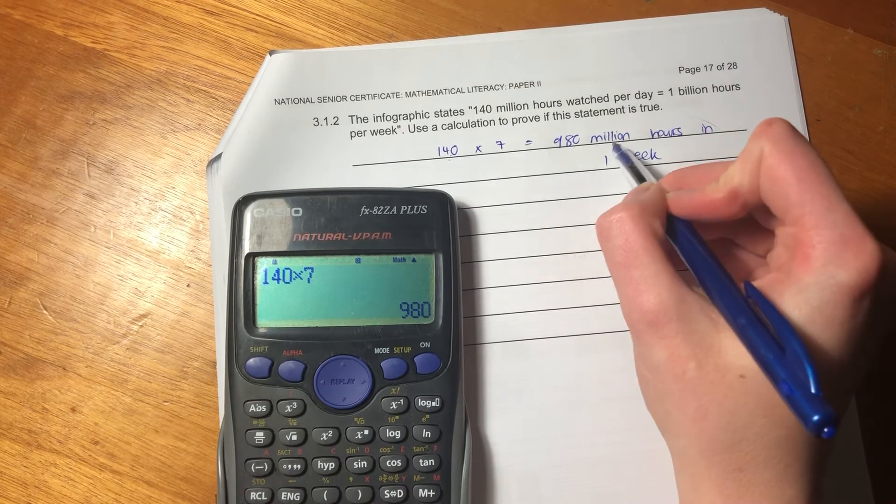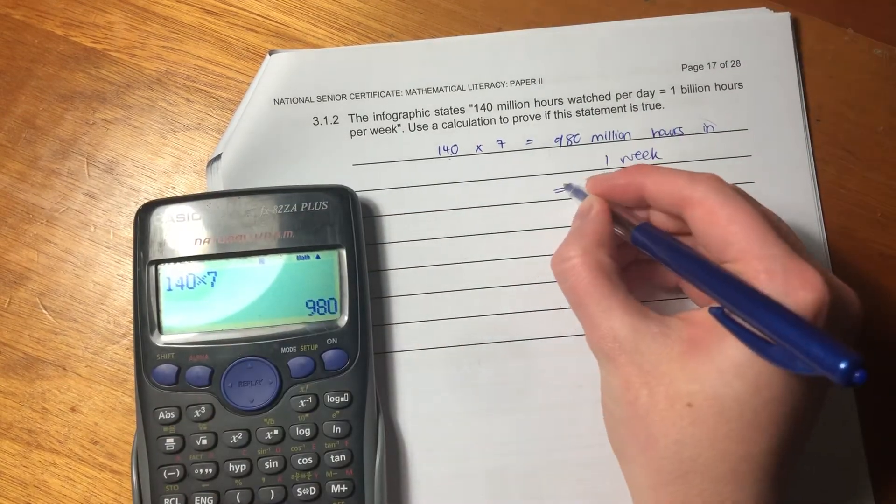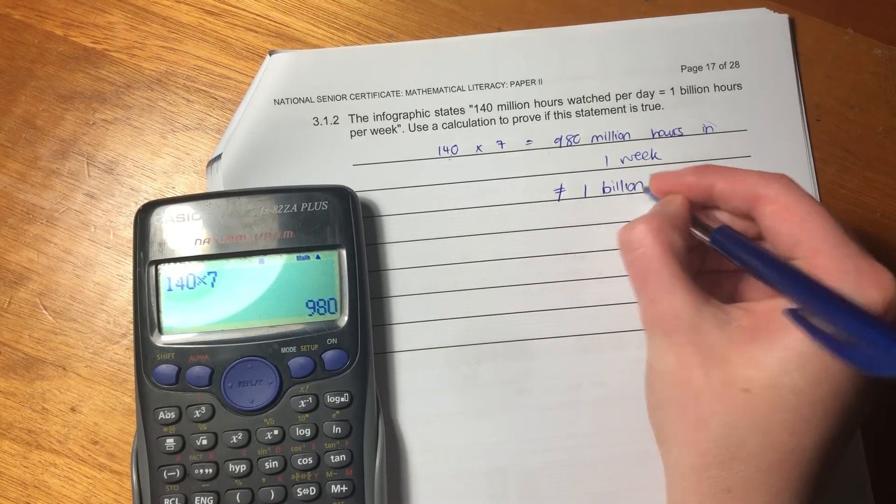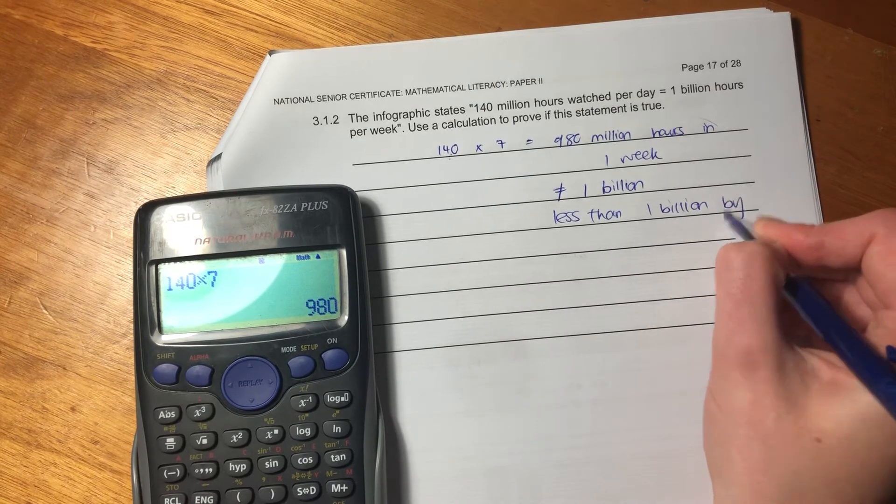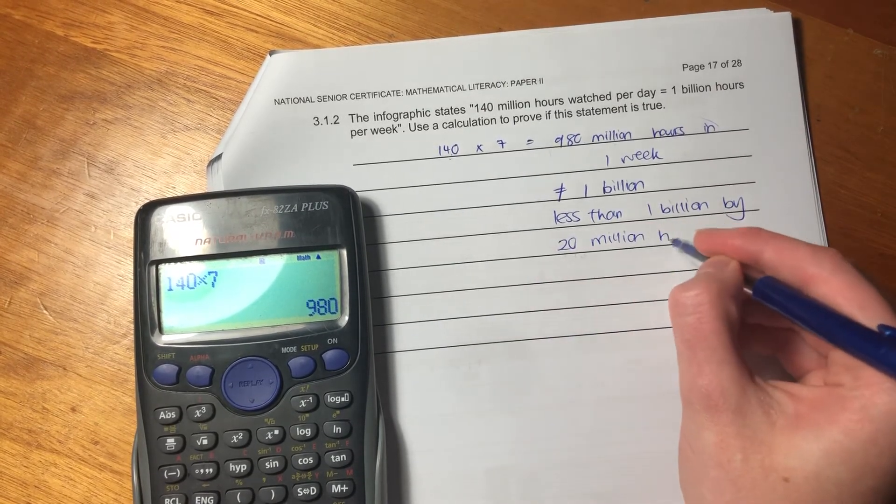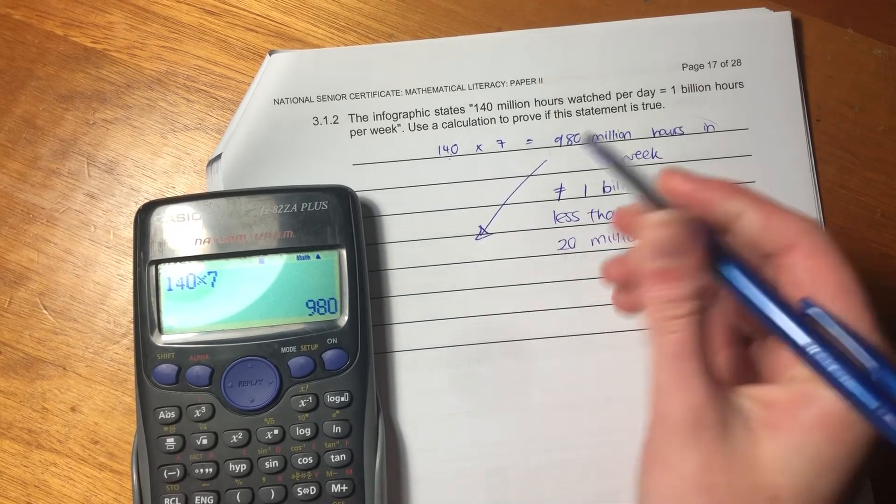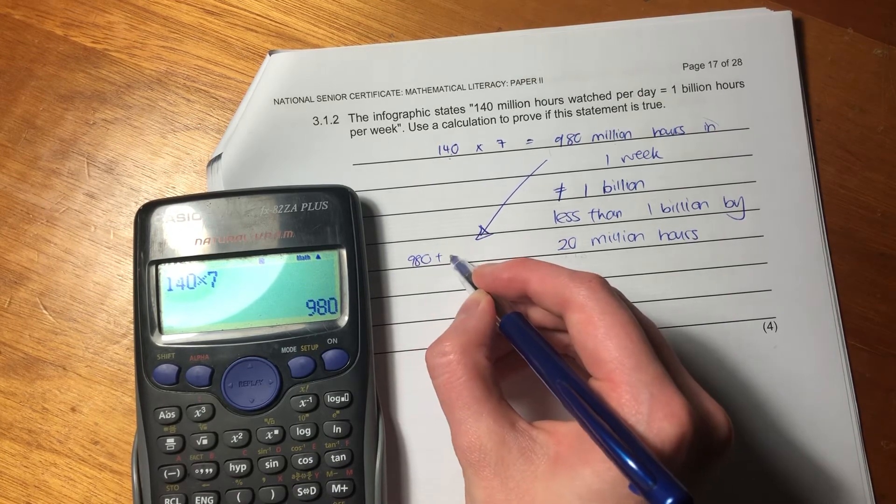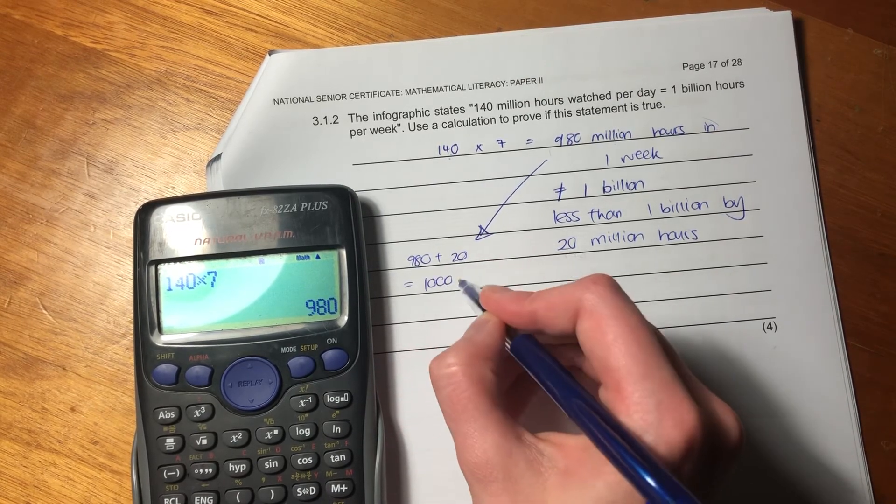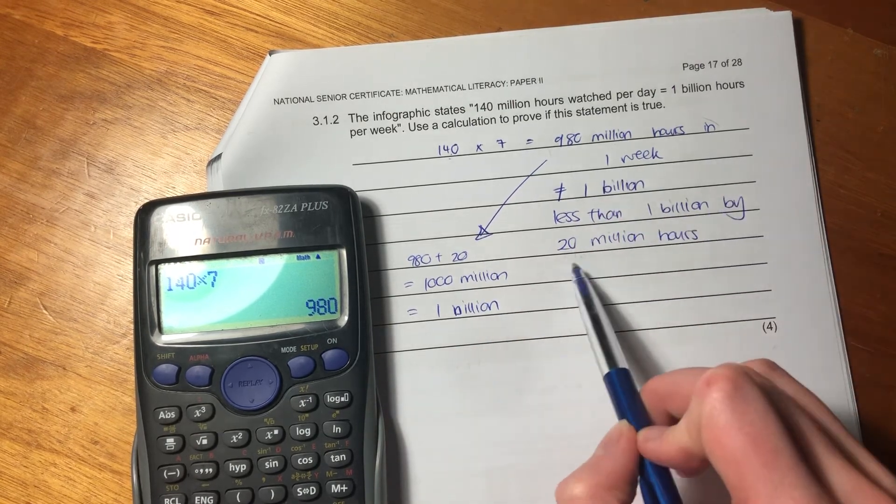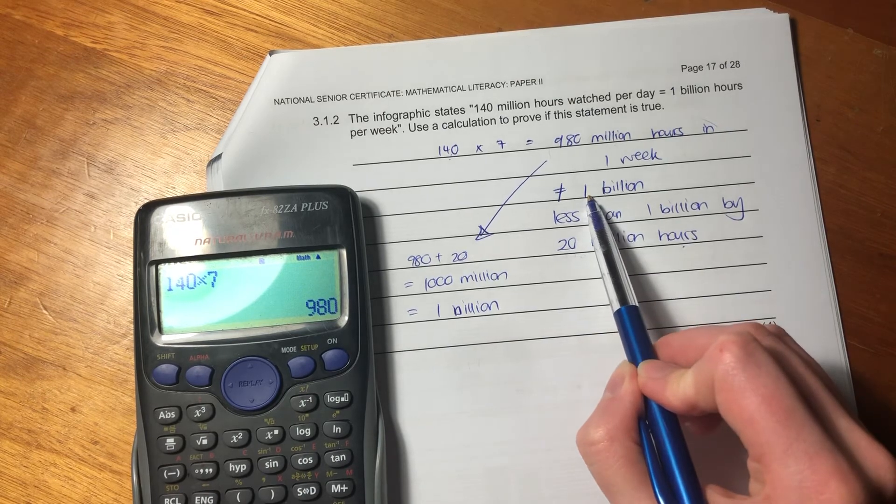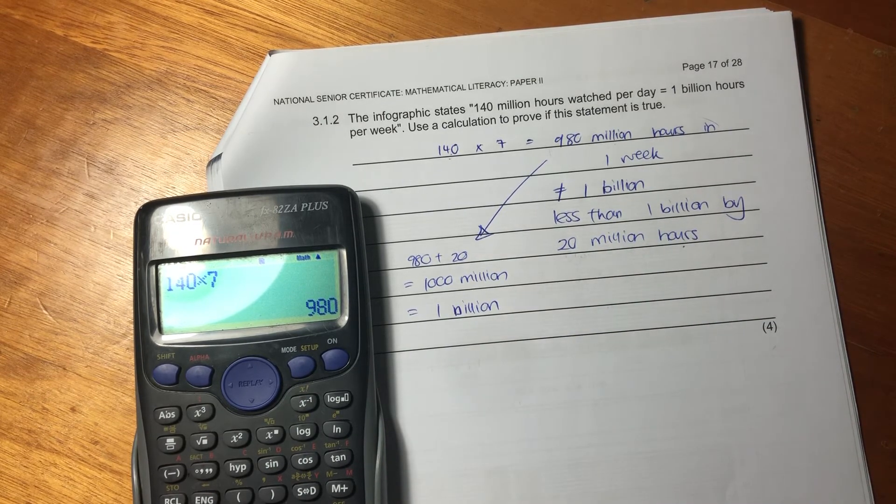Now, tell me, is 980 million equal to 1 billion? No, it isn't. This does not equal 1 billion. In fact, it is less than 1 billion by 20 million hours. So we'd have to add, if I said 980 million plus 20, then I get to 1,000 million, which equals 1 billion. But that's not what it equals. So we're 20 million hours short of 1 billion in one week. So that is the easiest way of going about it. But here, what it's testing is whether you understand how many millions are in a billion. And there is 1,000 millions in a billion.